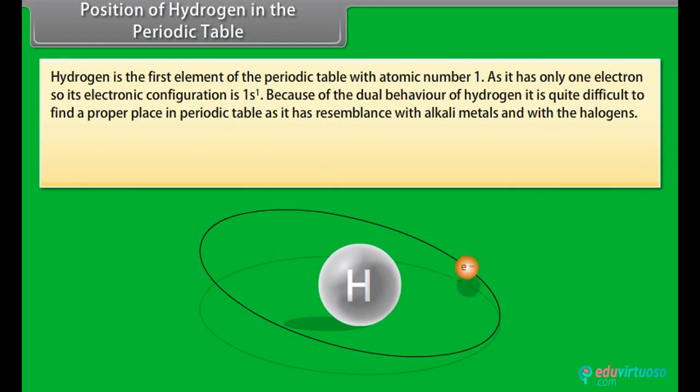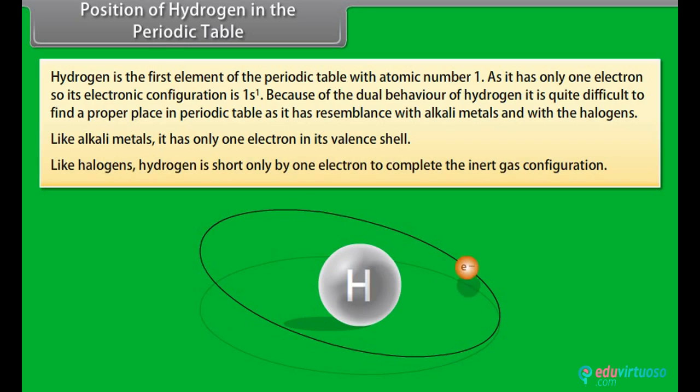Hydrogen is the first element of the periodic table with atomic number 1. As it has only one electron, so its electronic configuration is 1s1. Because of the dual behavior of hydrogen, it is quite difficult to find a proper place in periodic table, as it has resemblance with alkali metals and with the halogens. Like alkali metals, it has only one electron in its valence shell. Like halogens, hydrogen is short only by one electron to complete the inert gas configuration.